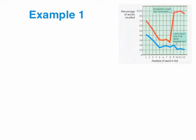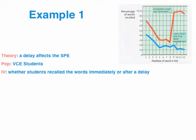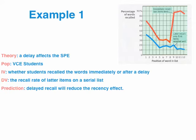Let's go through a couple of examples. A lot of schools did this as their first ERA SAC for the year back in second term — looking at the impact of a delay on the serial position effect. Just saying 'the delay affects the serial position effect' is a statement, but in its current form it's not testable. So let's work on our four ingredients. Population: VCE students. IV: half the class recalls words immediately after they're read out; the other half recalls them after a brief delay. DV: the percentage recall of the last few items on the serial list. Prediction: the delay is going to reduce the recency effect.